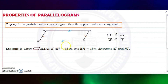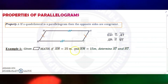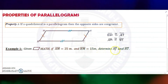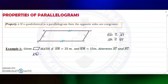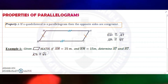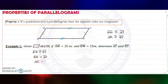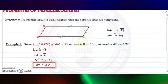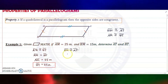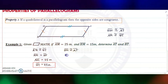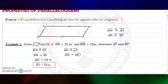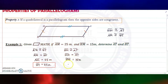For example number one: given parallelogram MATH, if AM is 25 meters and HM is 15 meters, determine the measure of side AT and side HT. Since AM is congruent to HT and they are congruent, they are equal. So AM is 25 meters, therefore HT is also 25 meters. Since HM is congruent to AT and HM is 15 meters, therefore AT also measures 15 meters.